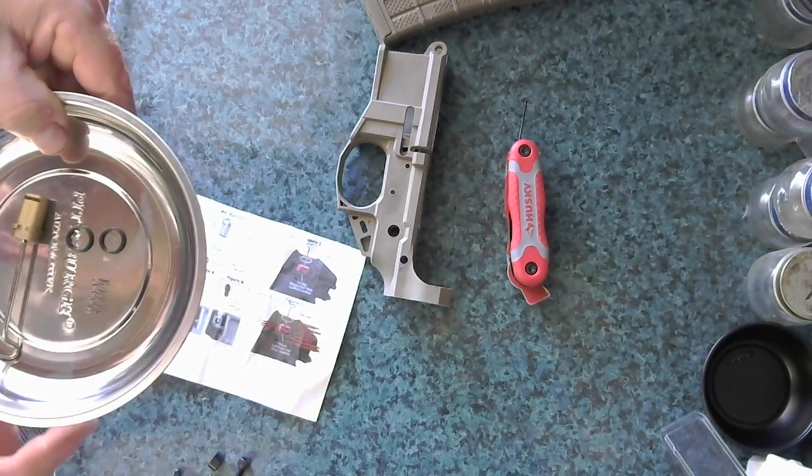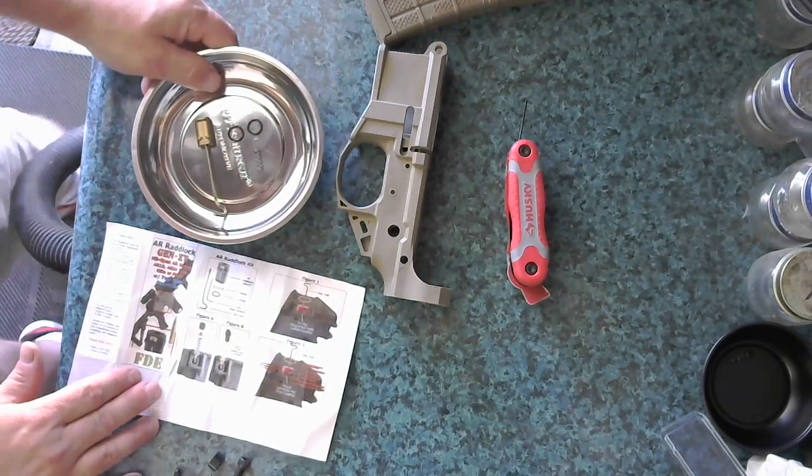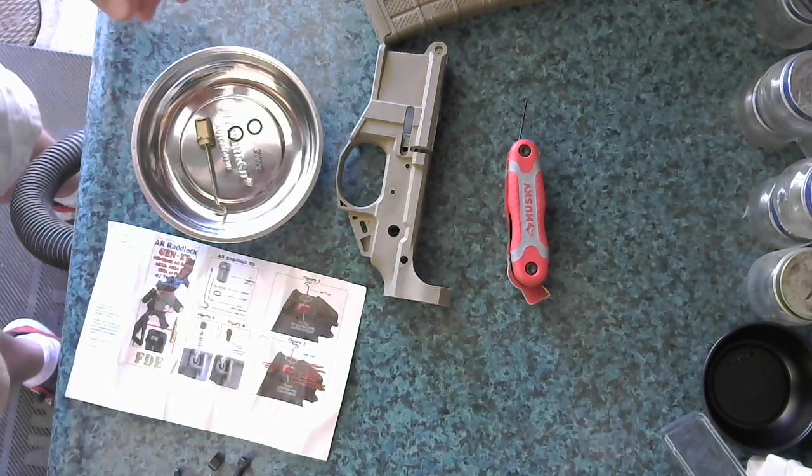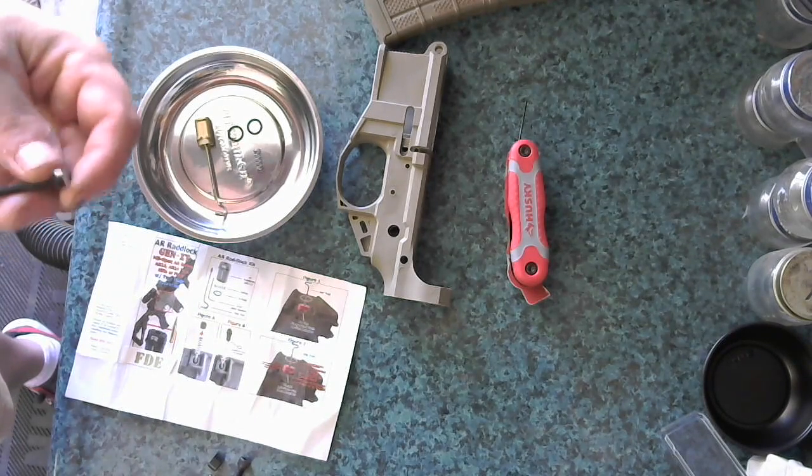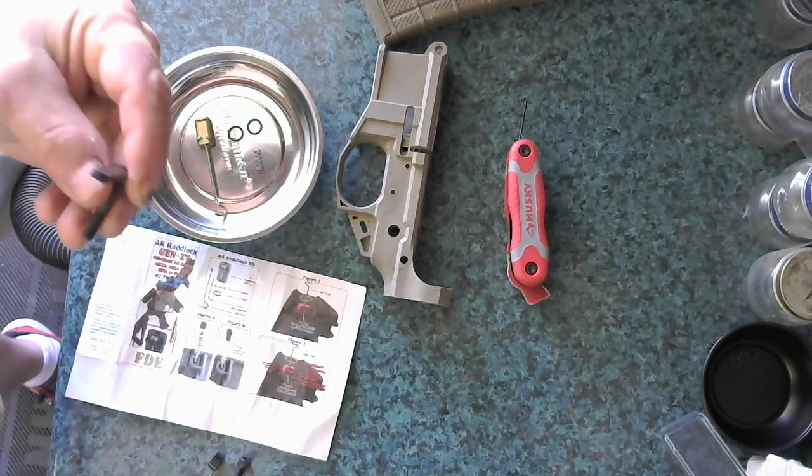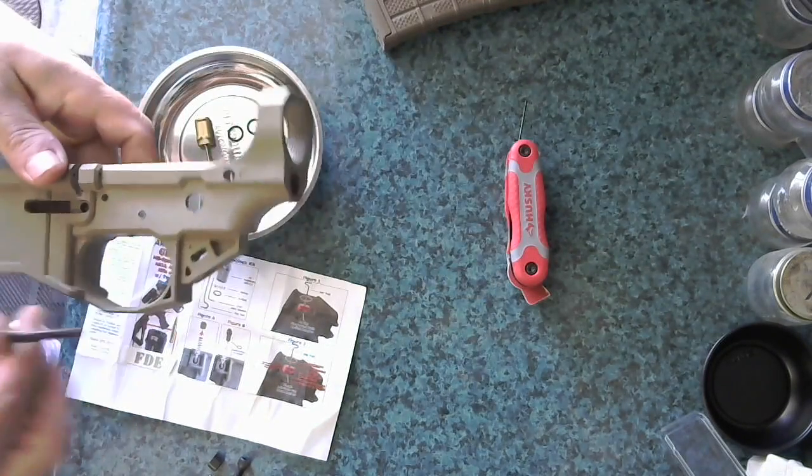The O-rings it said use as necessary, and I ended up not using them. I'll hold on to them, maybe I'll need them later. So from your lower kit, you should have this for your magazine release, and this is going to go obviously on this side.